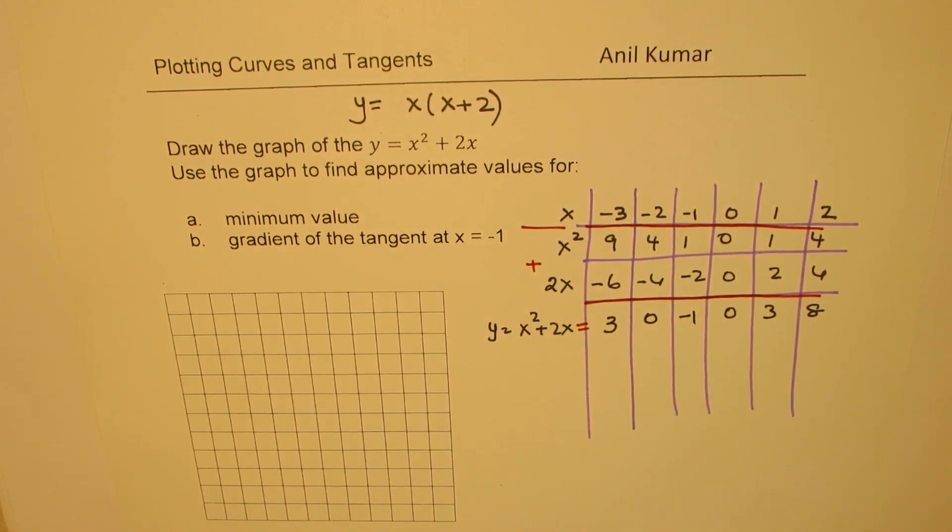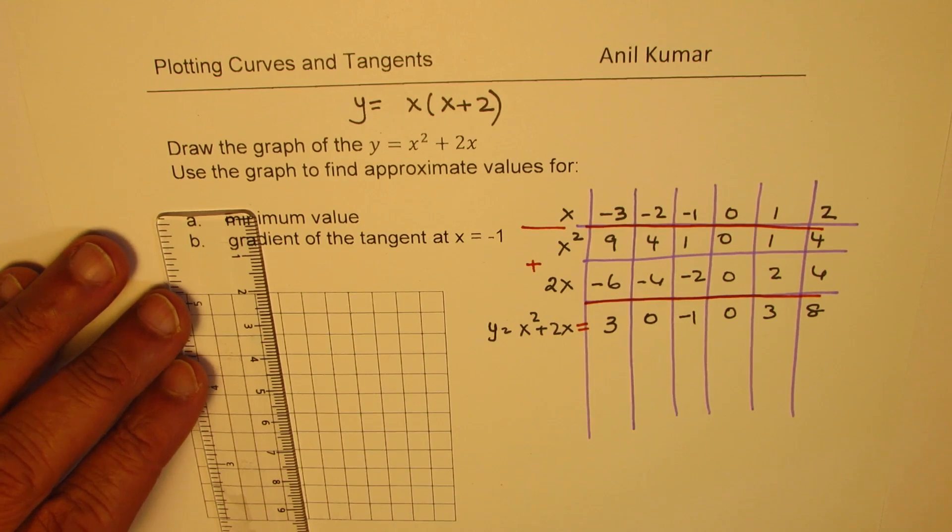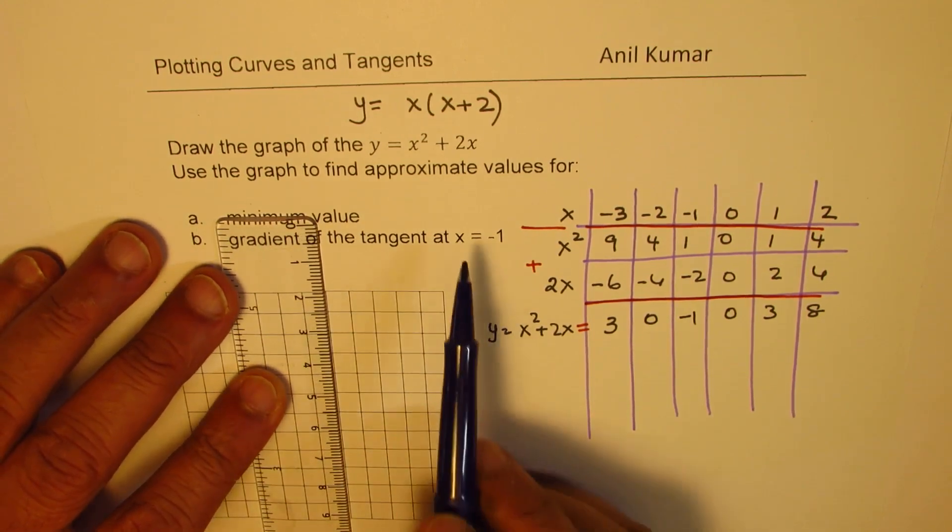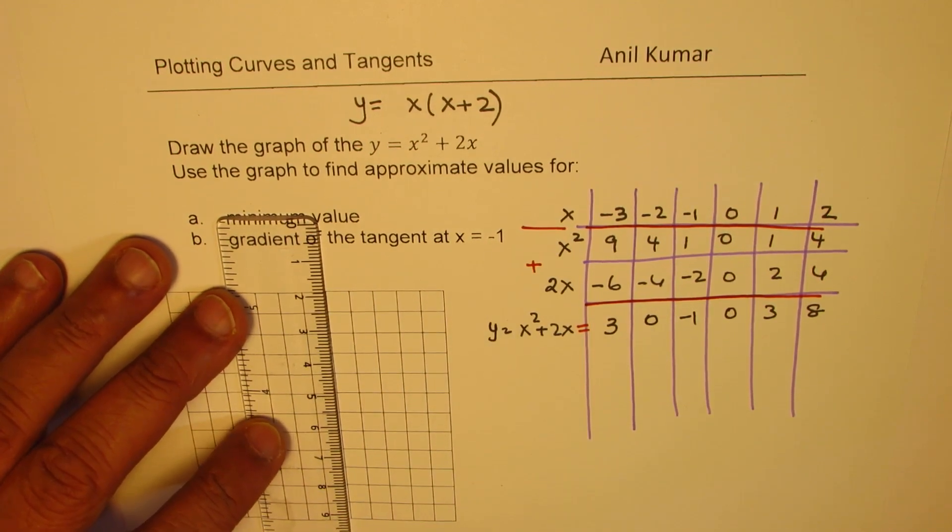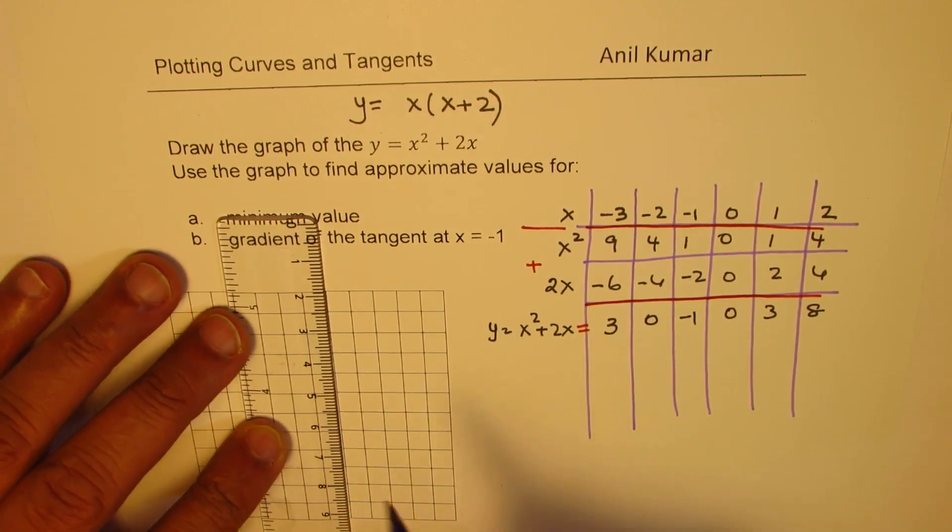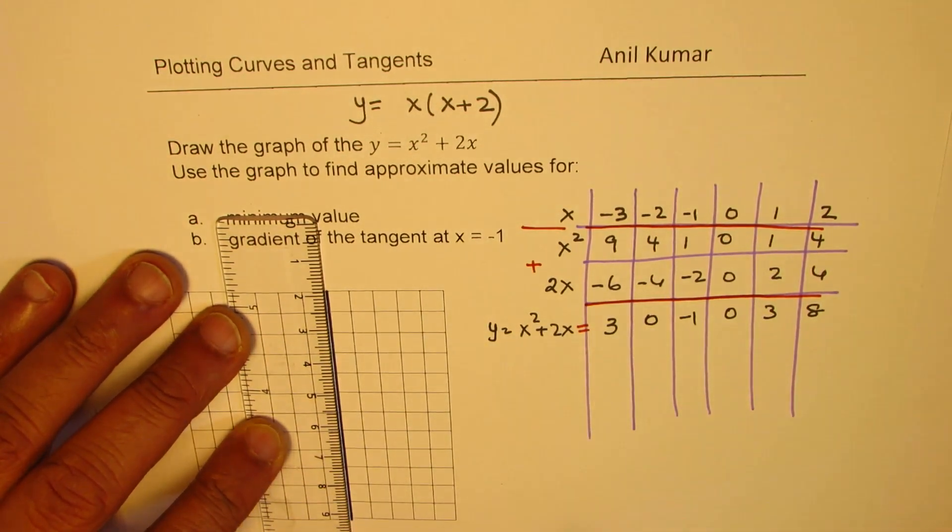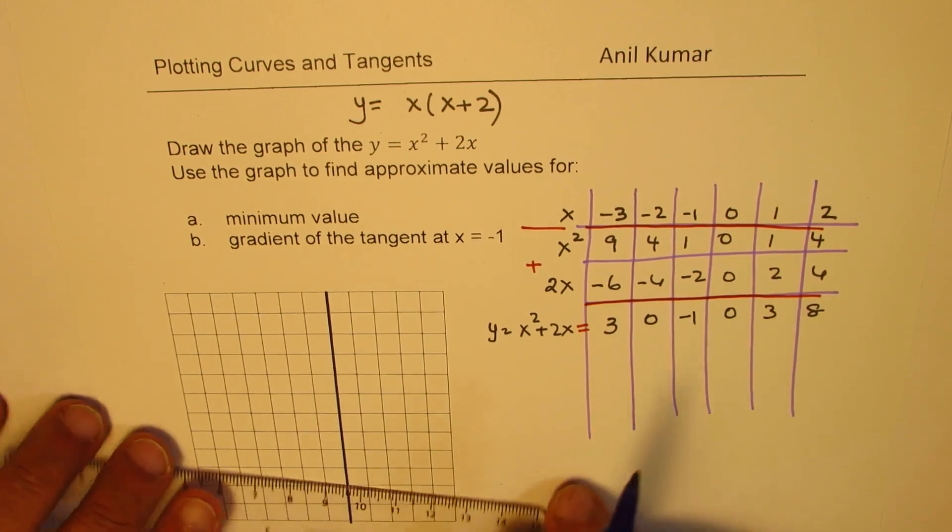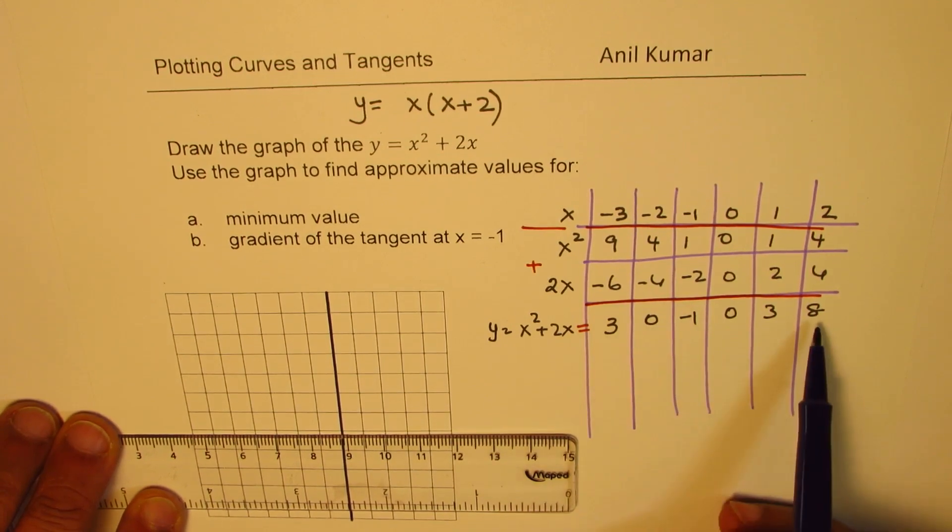Now we have the coordinate points. Let's try to sketch the parabola. So almost at the middle, we'll make this curve go like this. We also need to find the tangent at x = -1. So I'll place the y-axis slightly on the right side. The minimum value which we see from here is around -1.